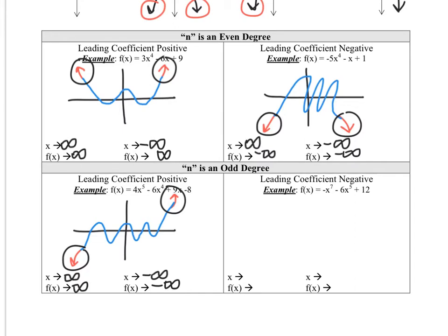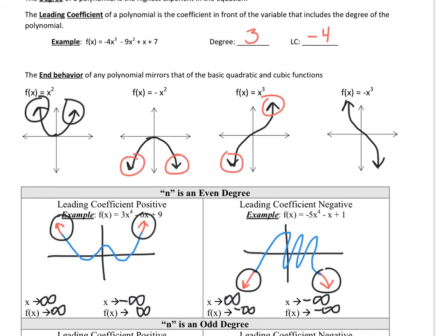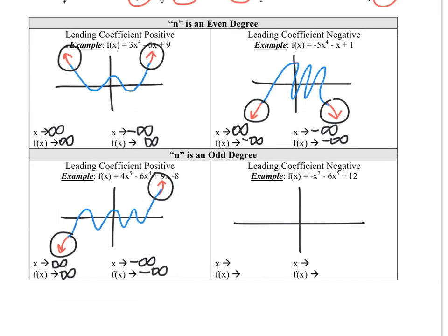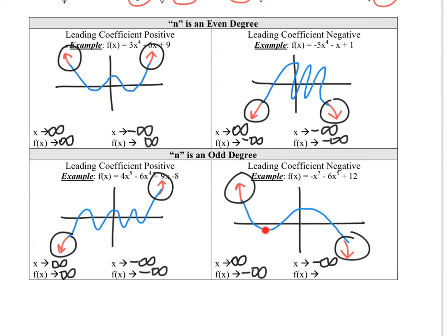Now the last example is when I have an odd degree but a negative coefficient. That one mirrors the negative cubic, with odd degree and a negative leading coefficient. So the end behavior goes up on the left and down on the right. As x gets bigger and bigger, y shoots down to negative infinity. And as x approaches negative infinity, my y values shoot up to positive infinity. Every time you're doing end behavior, you should always write it in these two parts.